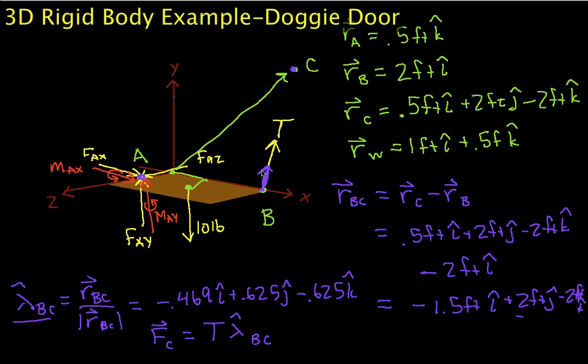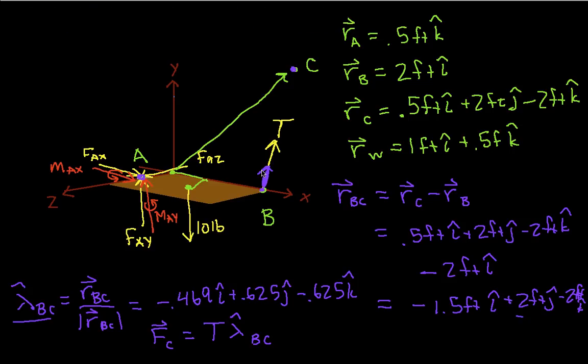Welcome to Part 2 of the analysis of the doggy door using 3D rigid body techniques. In Part 1, we got to the point where we had position vectors for the points of interest, and we had expressed the force applied by the cable as this unknown tension times this known unit vector.